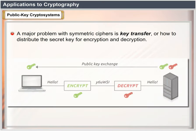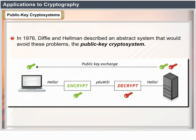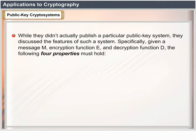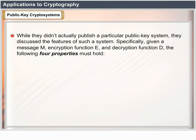A major problem with symmetric ciphers is key transfer — how to distribute the secret key for encryption and decryption. In 1976, Diffie and Hellman described an abstract system that would avoid these problems: the public key cryptosystem. While they didn't actually publish a particular public key system, they discussed the features of such a system. Specifically, given a message M, encryption function E and decryption function D, the following four properties must hold.